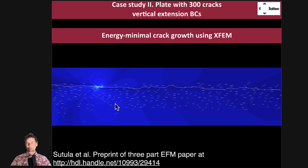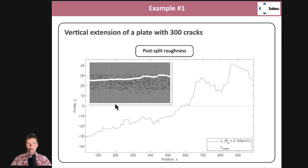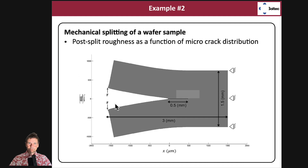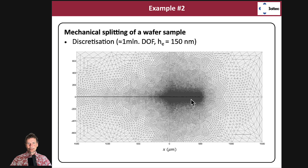It was a way to split silicon wafers using hydrogen enrichment — a very smart idea by people from CEA who founded the company Soitec. This is the post-split roughness that you can see. We compared to experiments and saw that the results were pretty nice. We can split the wafer and look at the propagation of the crack in the damaged zone. I think this was an excellent piece of work that Danas did.